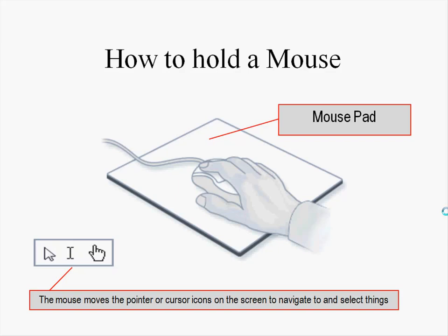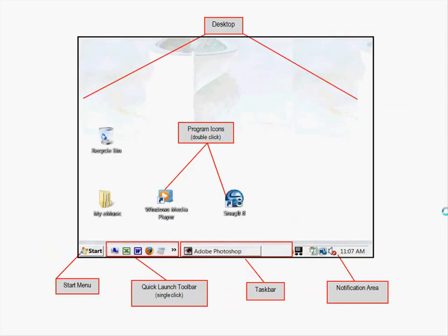That's basically how you use a mouse. You can lay your hand on it and move it around — you should be able to see a cursor or pointer on the screen in front of you. But what do you do with a mouse? We're going to find out, because next we're going to talk about the desktop — the area you see when you first turn on your computer.